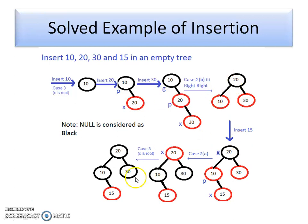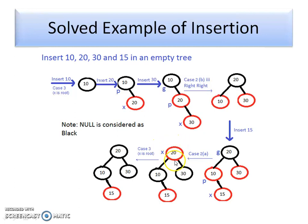Next we insert 15. By BST property, 15 becomes the right child of 10 and is red, falling under Case 2A — both 15 and its parent are red and the uncle is red. We change the color of both uncle and parent from red to black. The grandparent's color also needs to change to red, but since it is the root node, we keep it black. The resulting tree satisfies all six properties of a Red-Black tree.